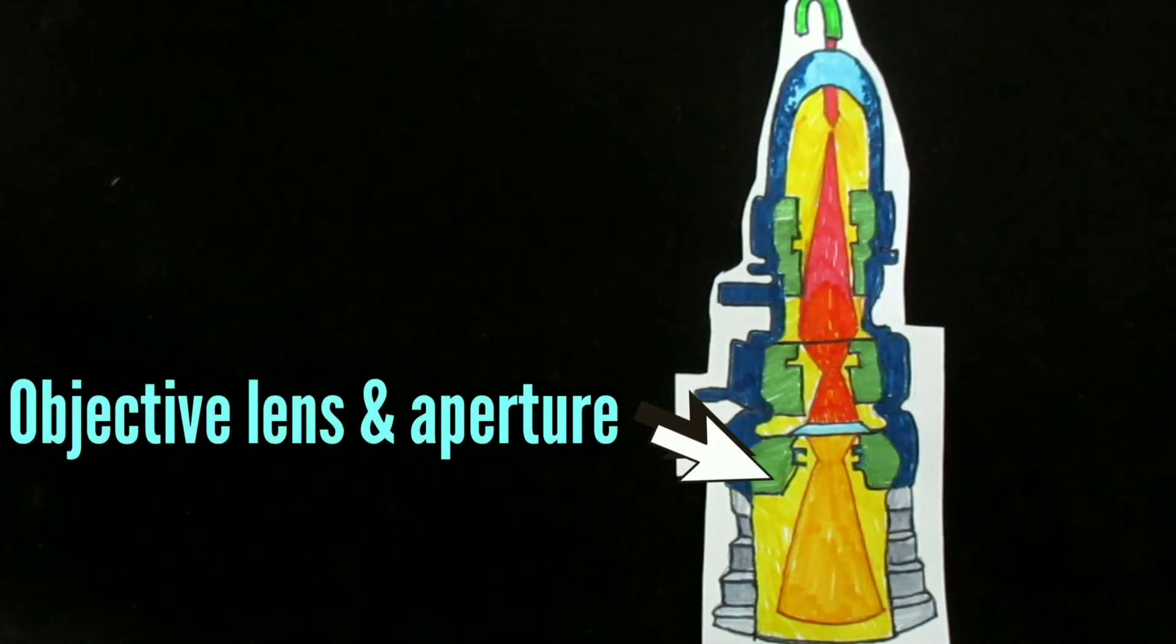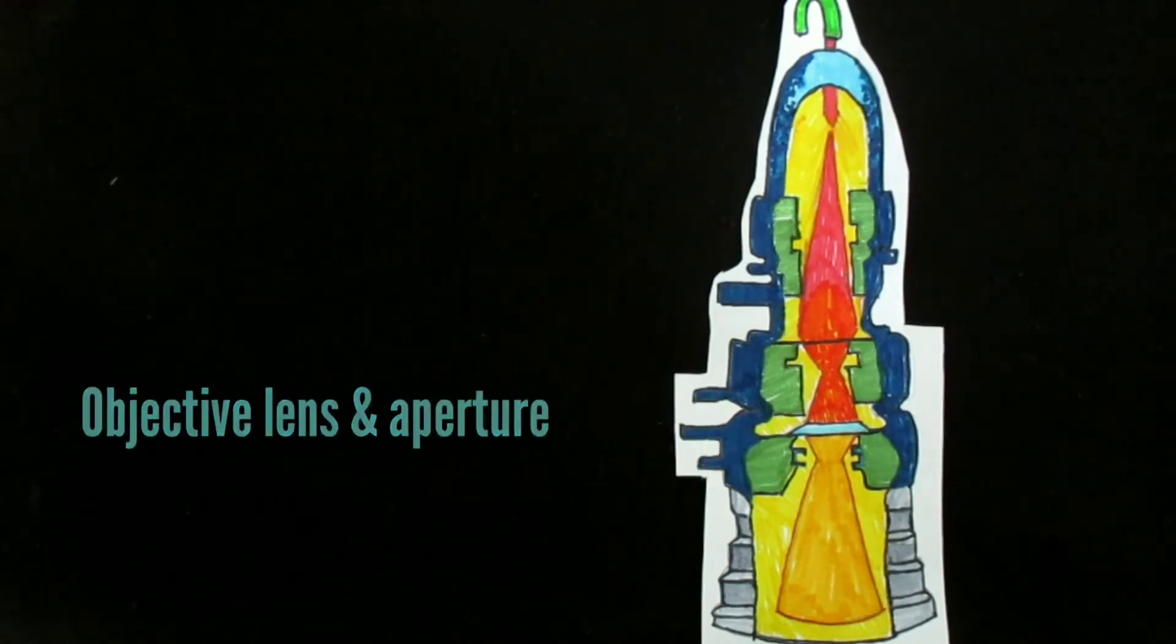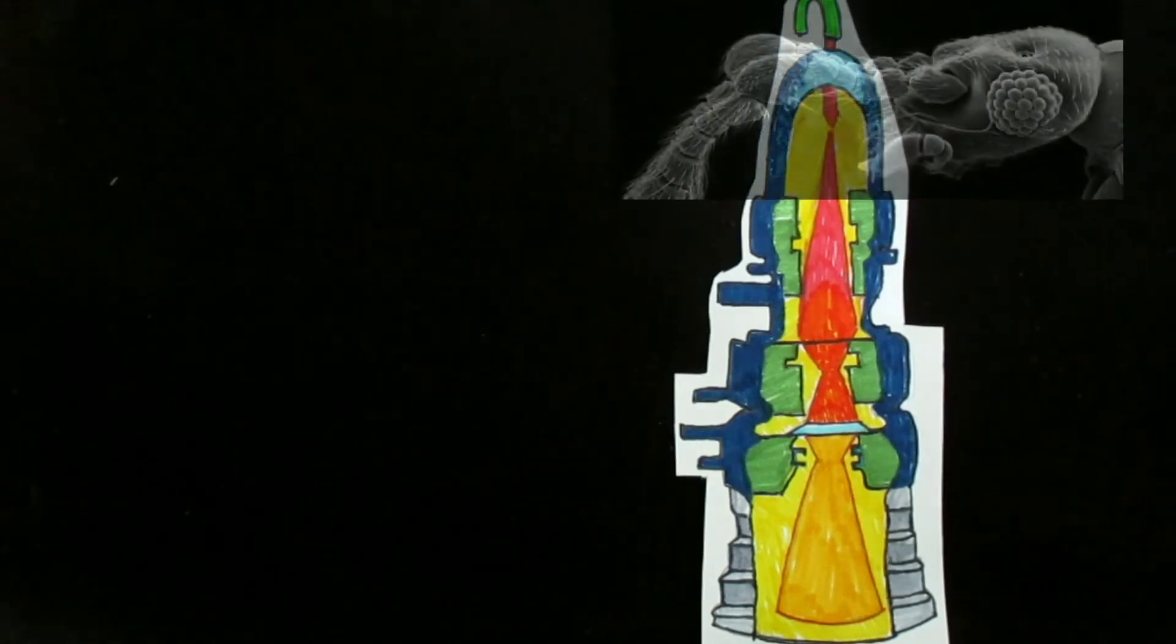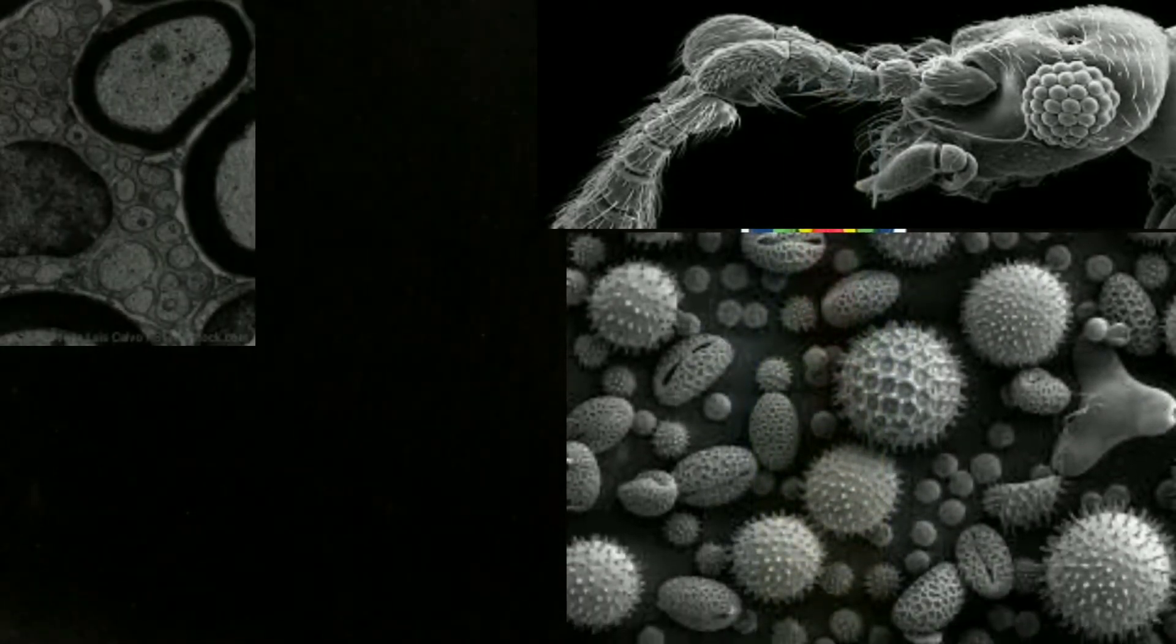As in light microscopy, the specimen is usually stained, in this case with electron dense material. Some of the electrons passing through the specimen are scattered by structures stained with the electron dense material.